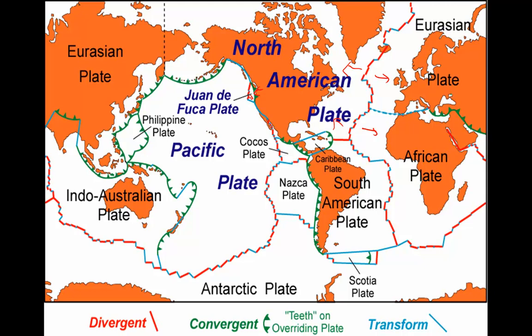Continental crust is thicker and more buoyant than oceanic crust. So when plates of continental and oceanic crust converge, the plate with continental crust overrides the thinner, denser oceanic plate. That process is called subduction. In that process, the older, denser oceanic crust is recycled back into Earth's mantle, marked by a trench at the surface and a volcanic arc farther inland, built on the overriding plate above the depth where the subducting plate causes melting in the mantle.